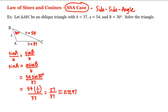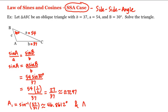Now since A is an angle in a triangle, its degree measure must be between 0 and 180 degrees, and therefore there are two possibilities for A. Let's call them A1 and A2. A1 is inverse sine of 27 divided by 37, which is approximately 46.8612 degrees. And there's also A2, which is 180 degrees minus A1, approximately 133.1388 degrees.